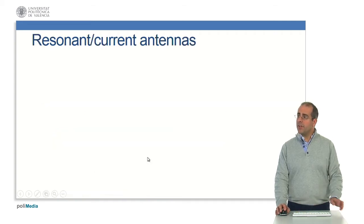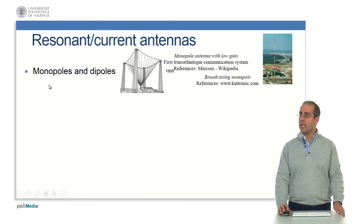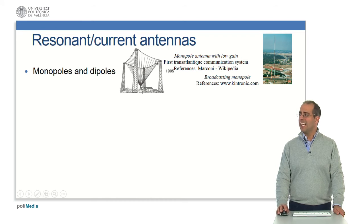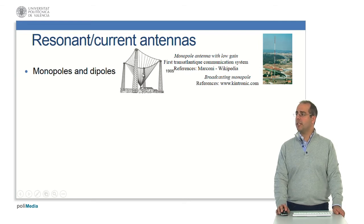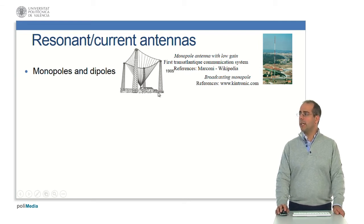The different types of antennas — first, we have the resonant current antennas, for example monopoles and dipoles. Here we have the first transatlantic communication system from Marconi; this is a monopole antenna with low gain. Here we have another example of resonant current antennas: the broadcasting monopole.